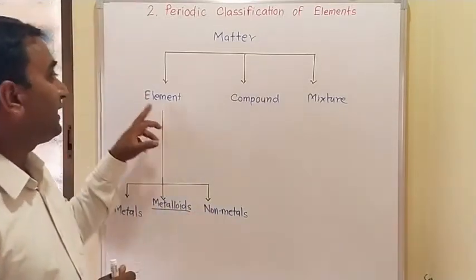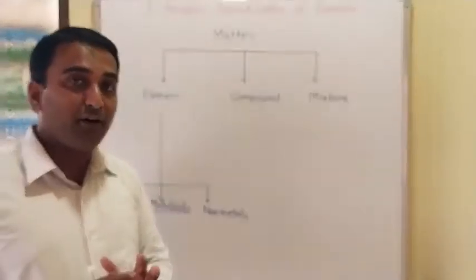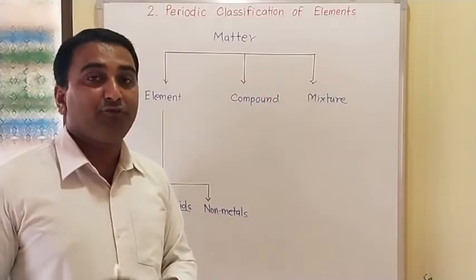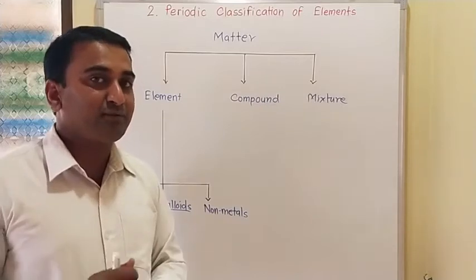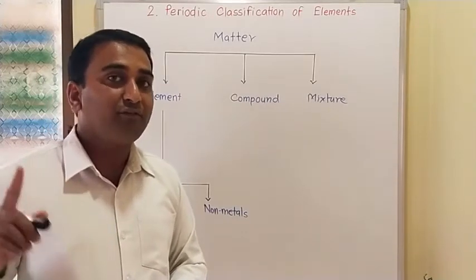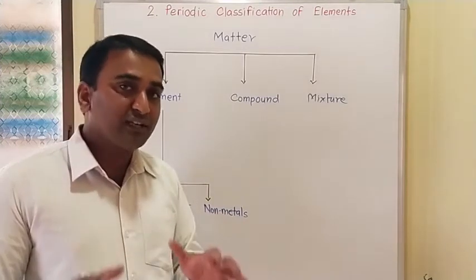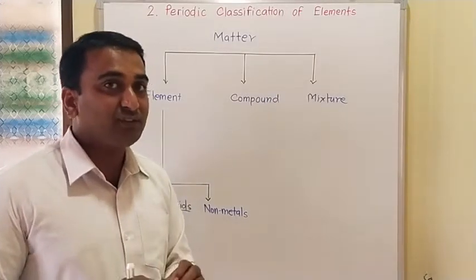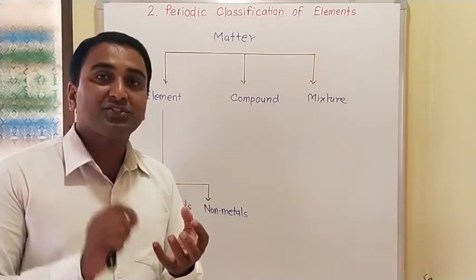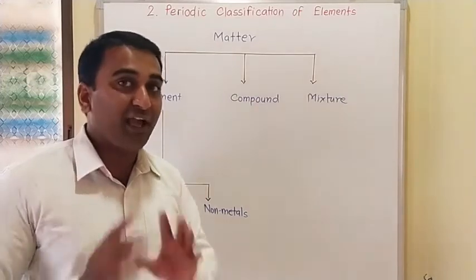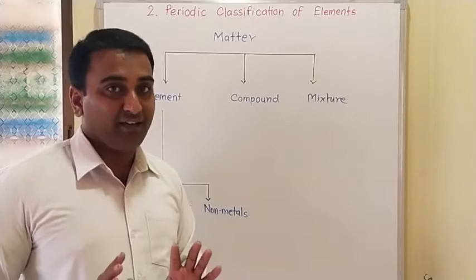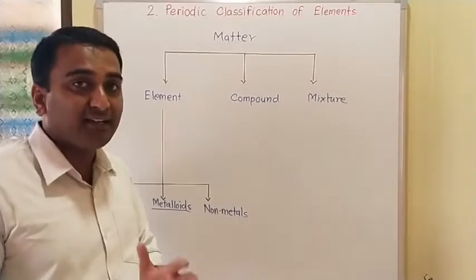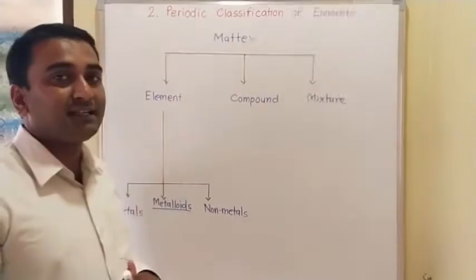What is an element? An element is a matter made up of particles all having the same properties. For example, in any school, students wear the same uniform — they have uniformity. Similarly, oxygen is an element because each and every particle of oxygen has the same property, the same mass. Matter made up of particles with the same properties is called an element.